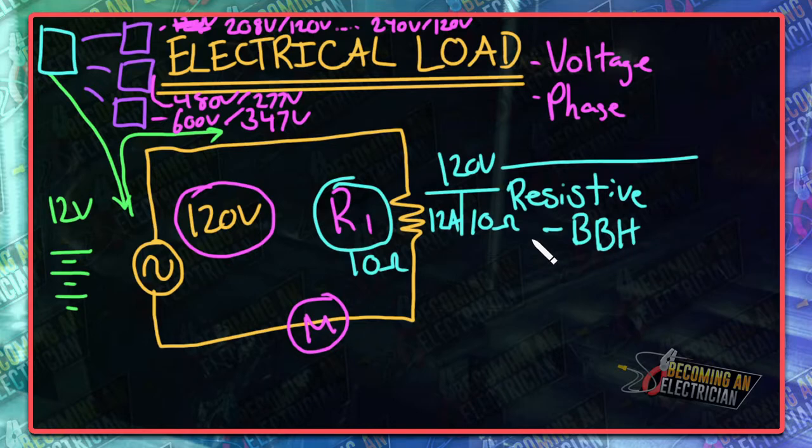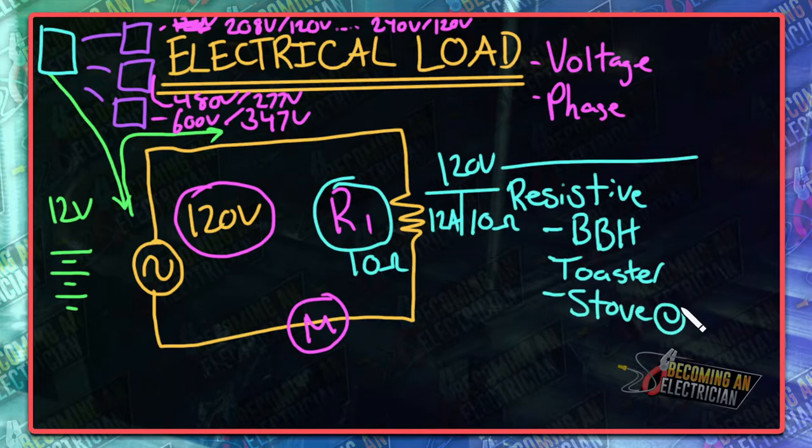When it comes to a resistive load, a baseboard heater is a very good example. Maybe like a toaster, you know in the morning you push it down for some pieces of toast and it's just warming up a resistor and it's getting really hot. Another example is like a stove top coil, they just kind of look like this.